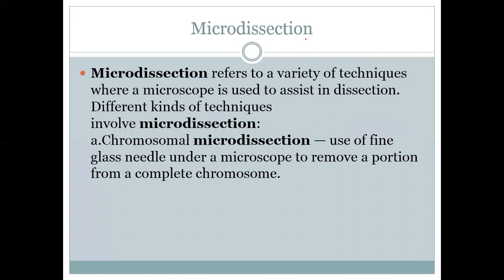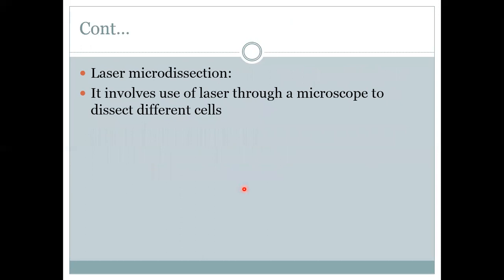Next is microdissection. Microdissection refers to a variety of techniques where a microscope is used to assist in dissection. There are two kinds: chromosomal microdissection uses a fine glass needle under a microscope to remove a portion from a complete chromosome; laser microdissection involves use of laser light under a microscope to dissect different cells.